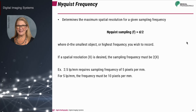The Nyquist theorem applies to CR imaging. The Nyquist frequency determines the maximum spatial resolution for a given sample frequency. The theorem states that if a certain spatial resolution is desired, the sampling frequency must be two times that. For example, a 2.5 line pair per millimeter resolution requires a sampling frequency of 5 pixels per millimeter; a spatial resolution of 5 line pairs per millimeter requires a sampling frequency of 10 pixels per millimeter.